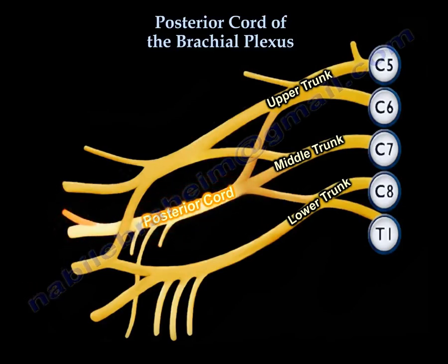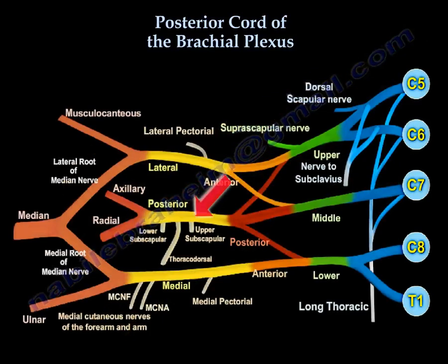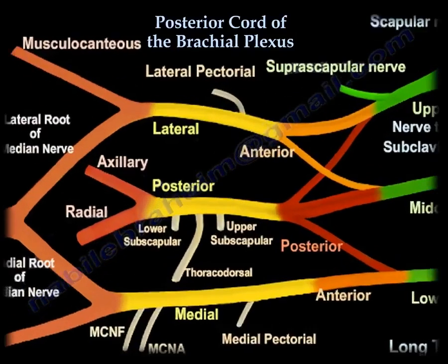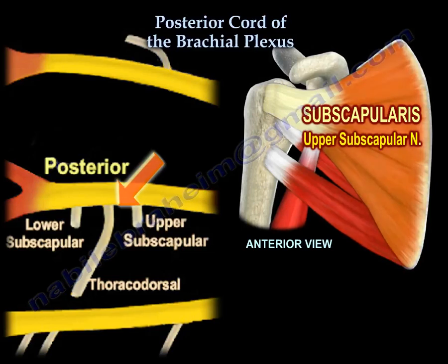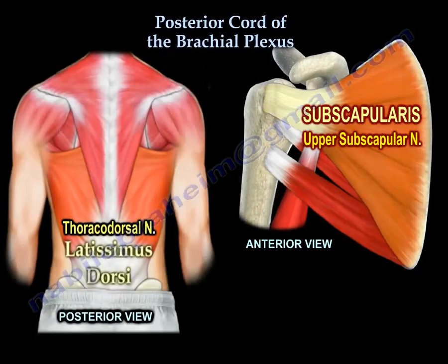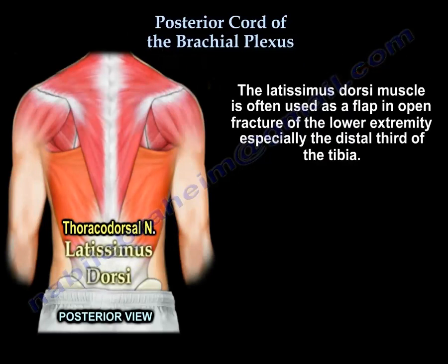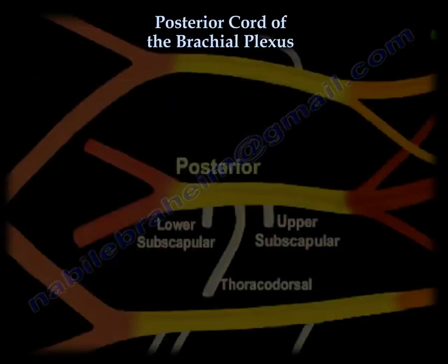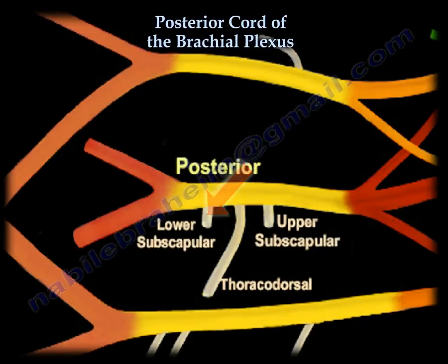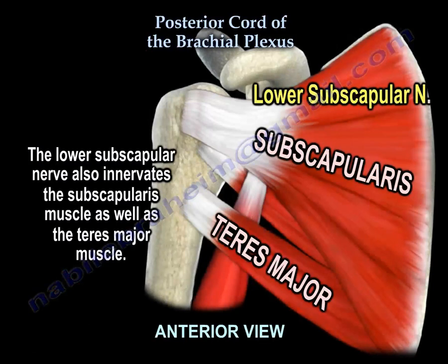What other branches does the posterior cord have? Starting with the upper subscapular nerve, which supplies the subscapular muscle, followed by the thoracodorsal nerve, which supplies the latissimus dorsi. This muscle is very useful in flaps for the lower extremity in open fractures, especially the distal third of the tibia, and can also be used in the shoulder as a transfer to help young patients with a large cuff tear that cannot be repaired. The lower subscapular nerve innervates the subscapular muscle and the teres major muscle.